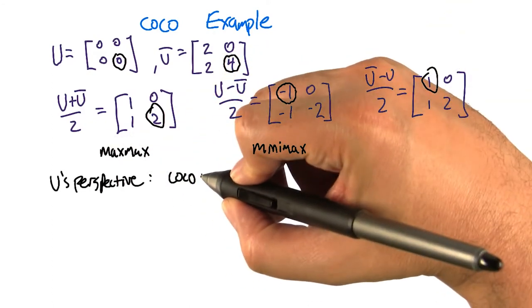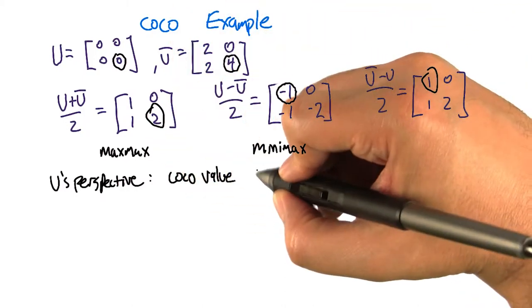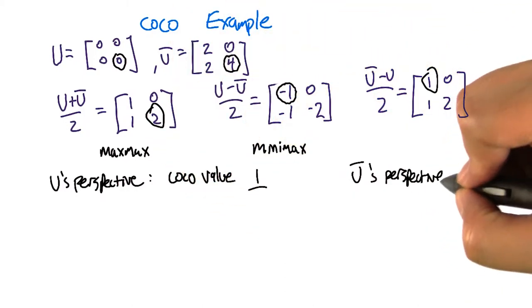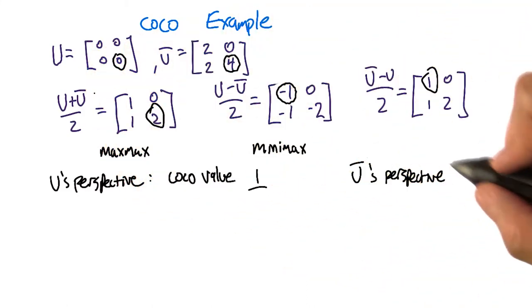So from the perspective of U, the cocoa value is the sum of these two things, which is 1. And from U-bar's perspective, the cocoa value is the sum of the min-max game and the max-max game, which is going to be 3.